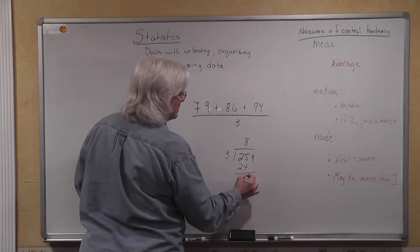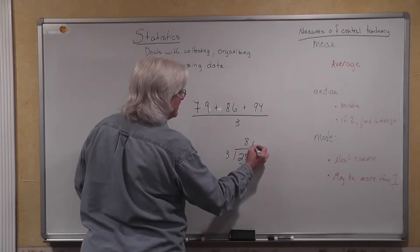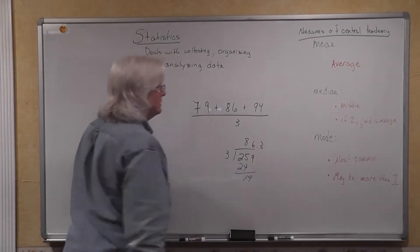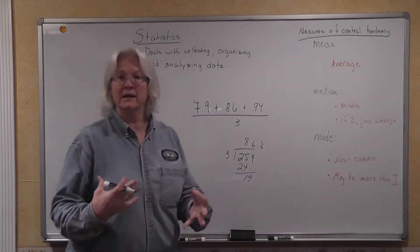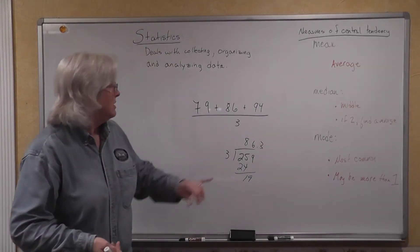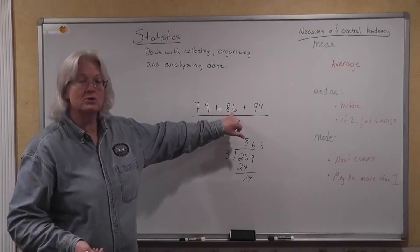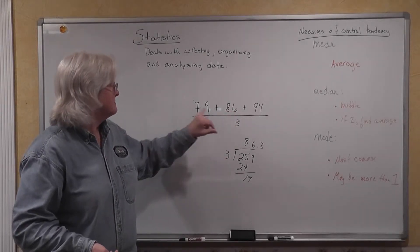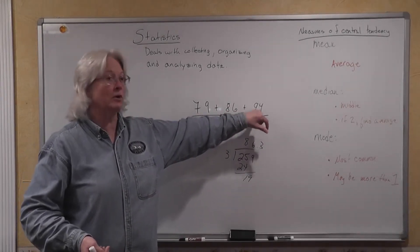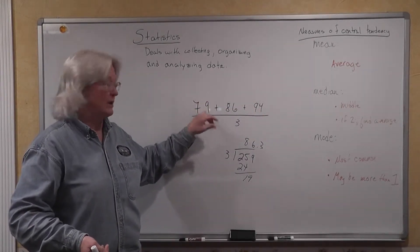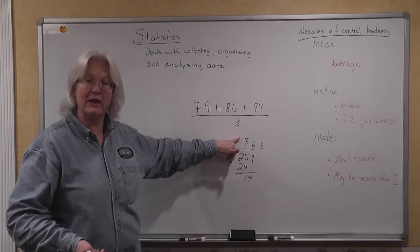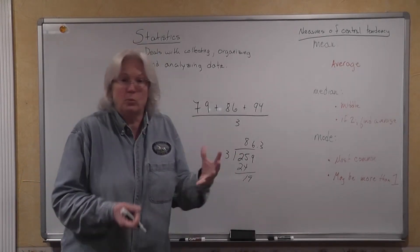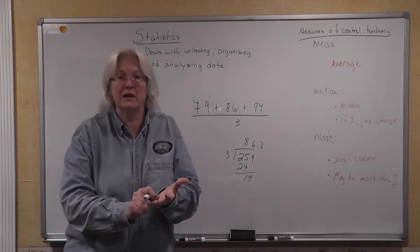19, and you have an 86.3% average. Which is about the score that you had right here on the second test. So what happened here, your 94 pulled up this lower grade. So you had an average of 86.3% in whatever this class was that you had three tests in.